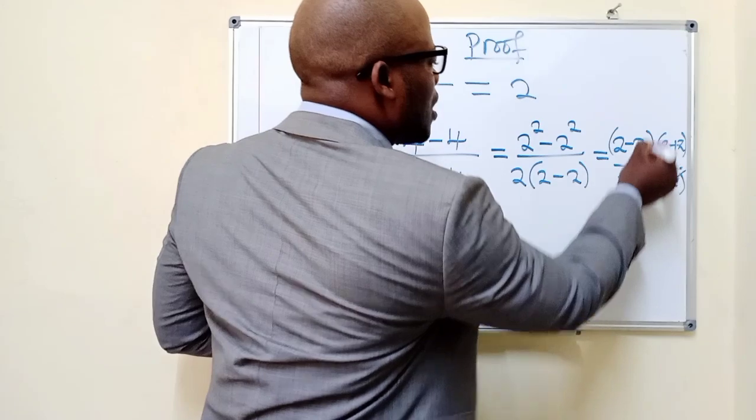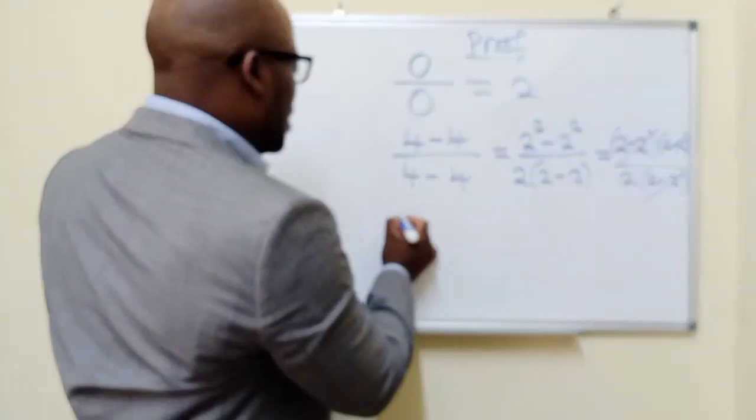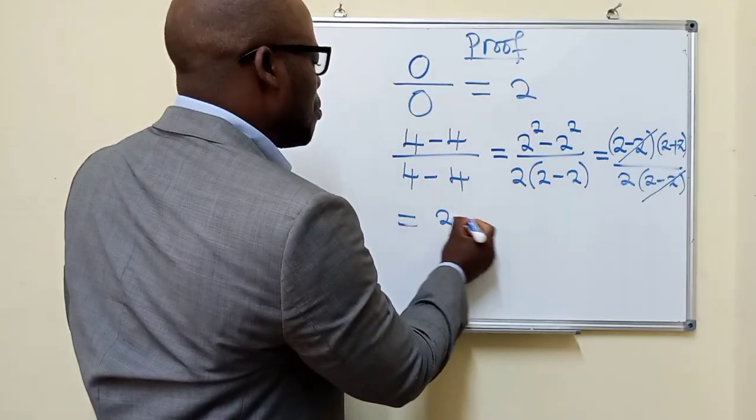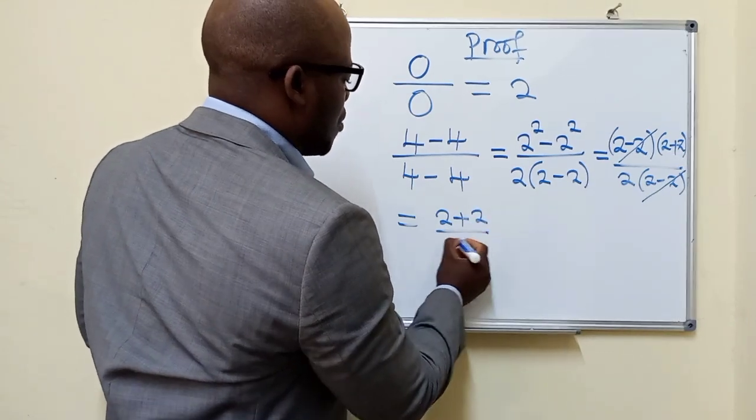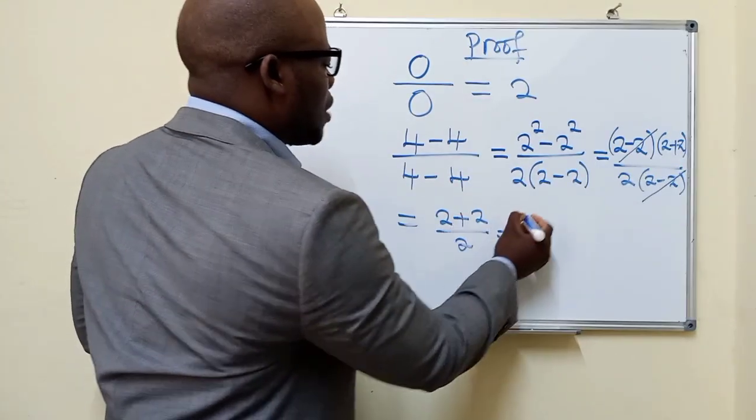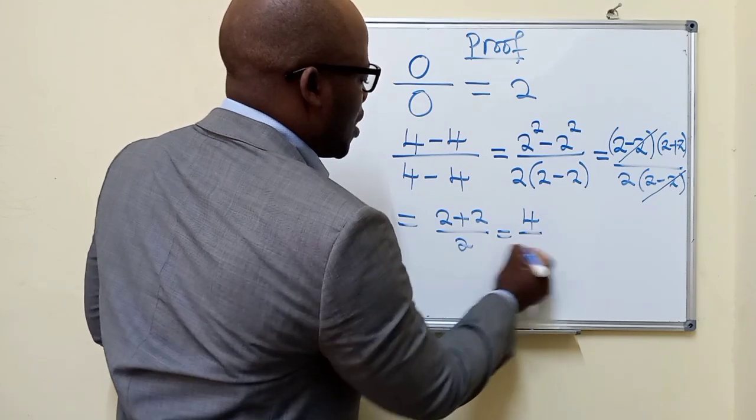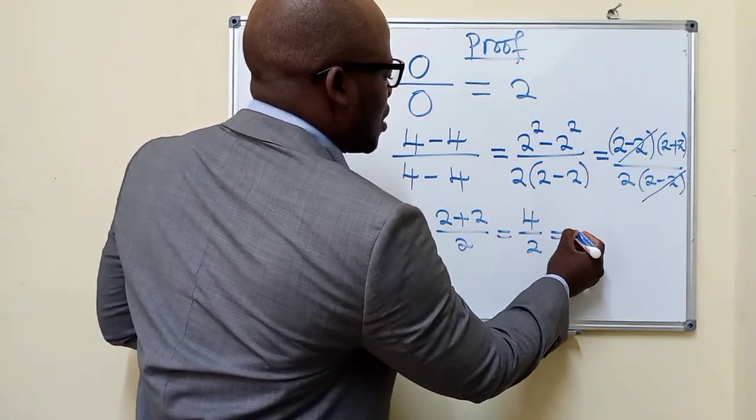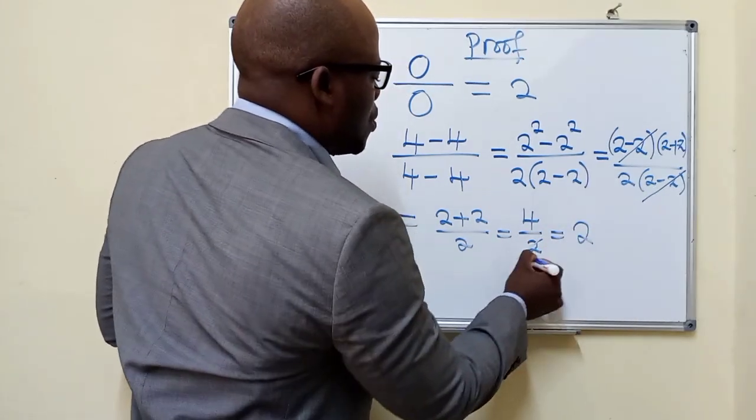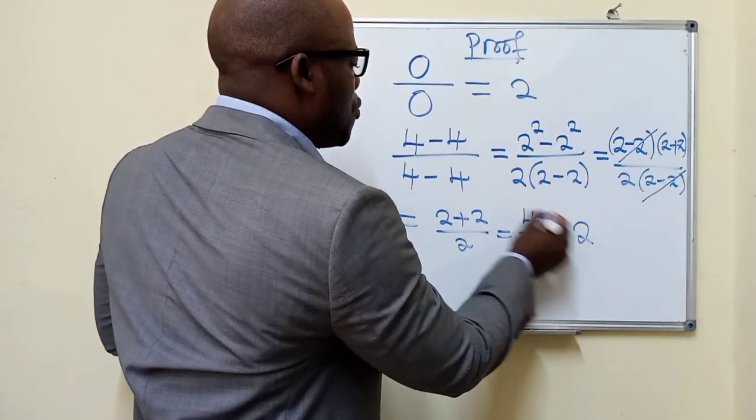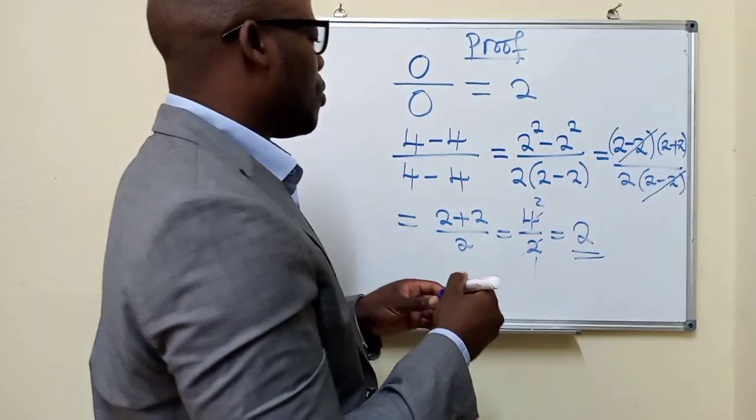So this and this would disappear. We shall remain with (2 plus 2) over 2. So what is 2 plus 2? That is 4 over 2, which is giving us 2. 2 into 2, 1 into 4, it's 2. And this is the 2 that we have.